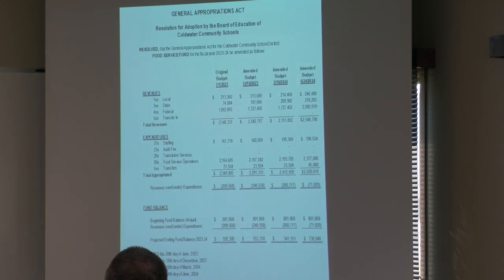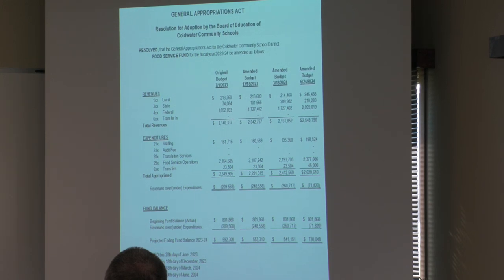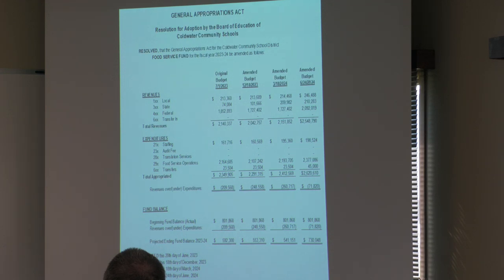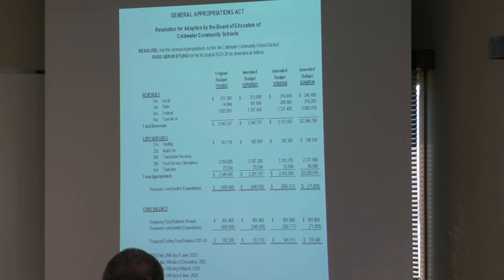For the food service budget, revenues were $2,548,790. A lot of food service revenues come from federal government reimbursement for meals, and we've received several grants to support breakfast and new equipment. Expenditures were $2,620,610, an increase of $208,041. We're showing a dip into fund equity of about $71,820, which will leave a projected fund equity of $730,048 — and the fund has plenty of money to sustain that cost.